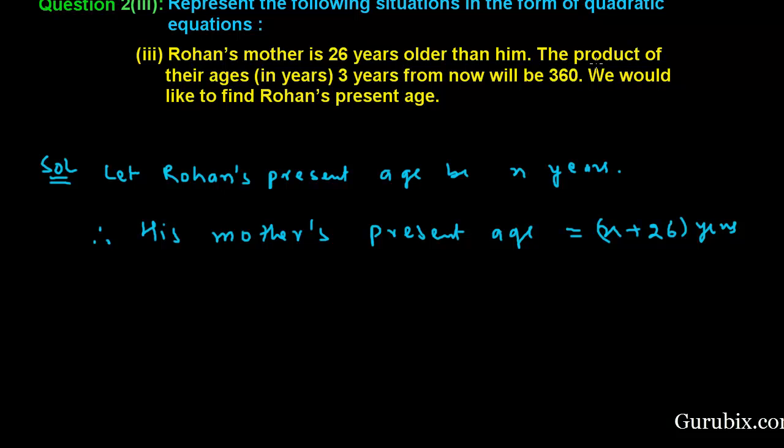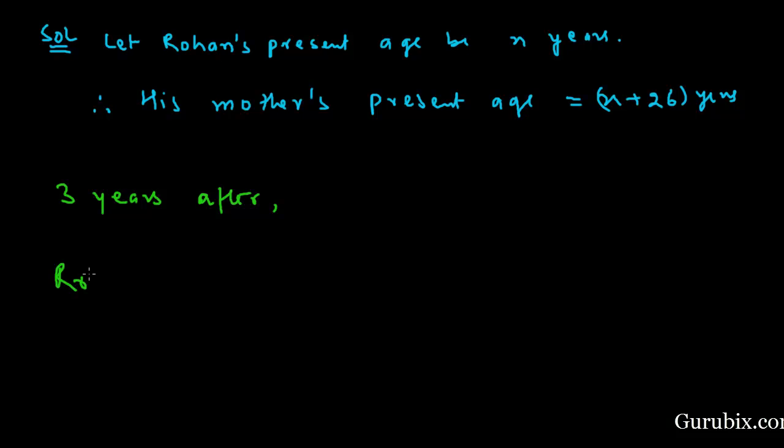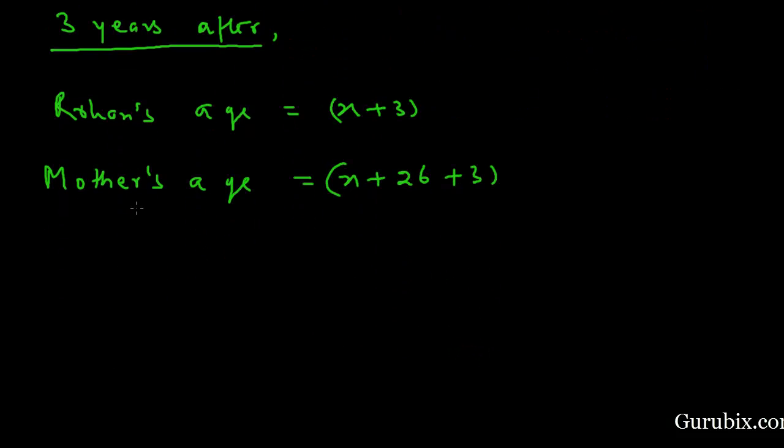We are given that the product of their ages in years, 3 years from now. So 3 years later, Rohan's age will be X plus 3. Mother's age 3 years after will be X plus 26 plus 3 years. This means the product of these ages: X plus 3 into X plus 29 equals 360.